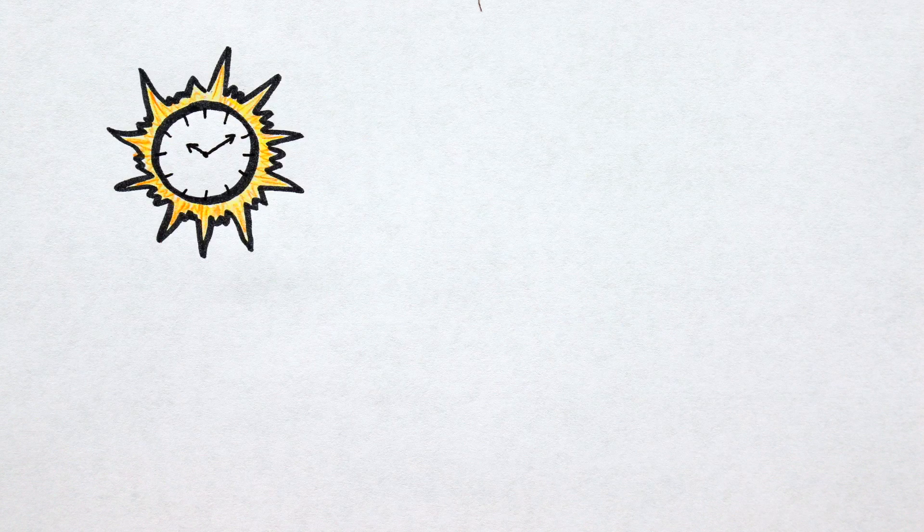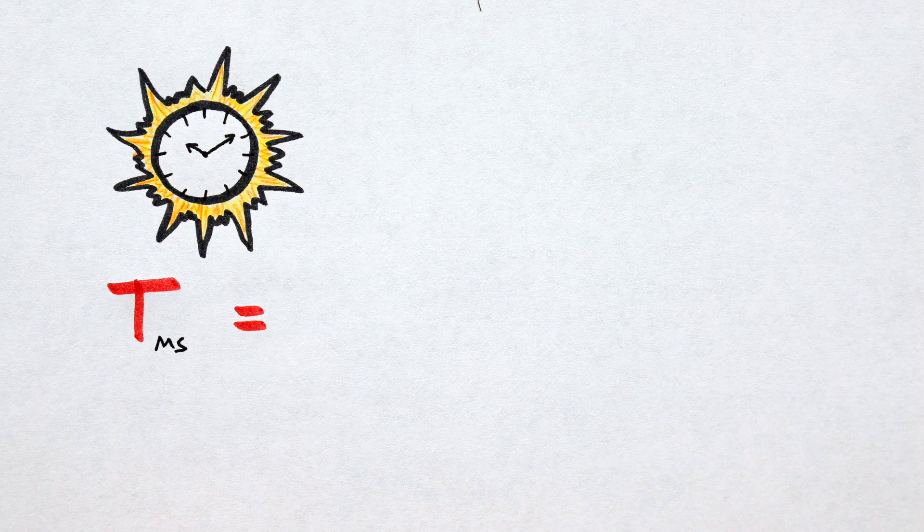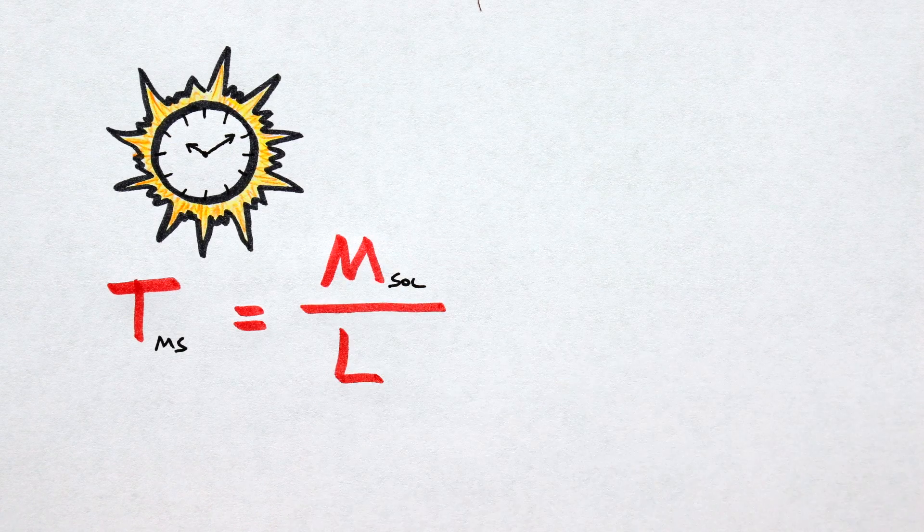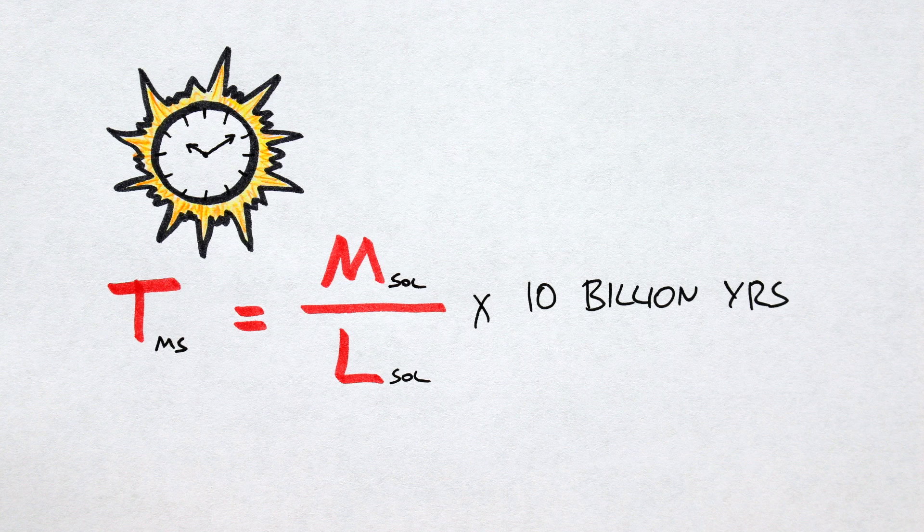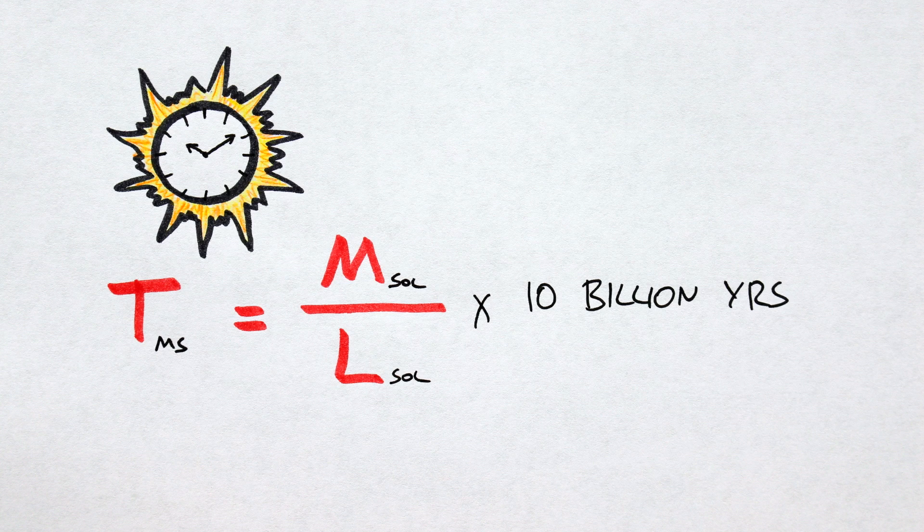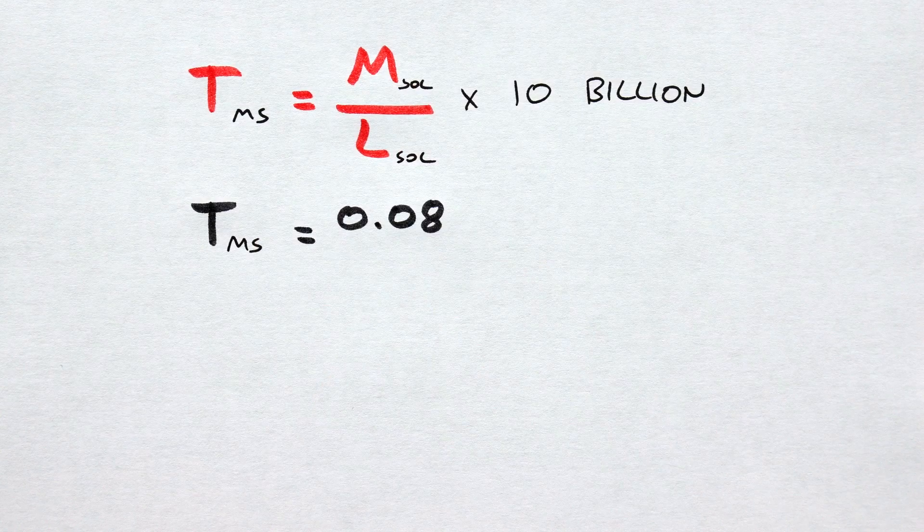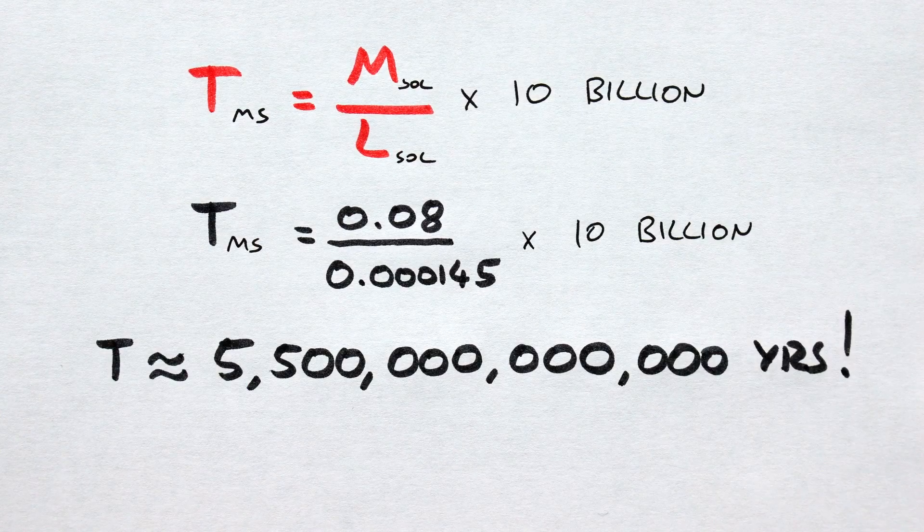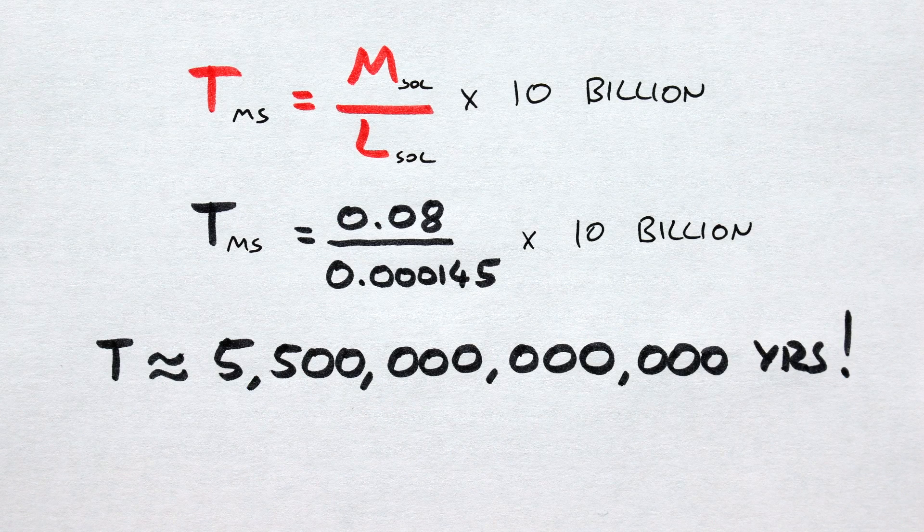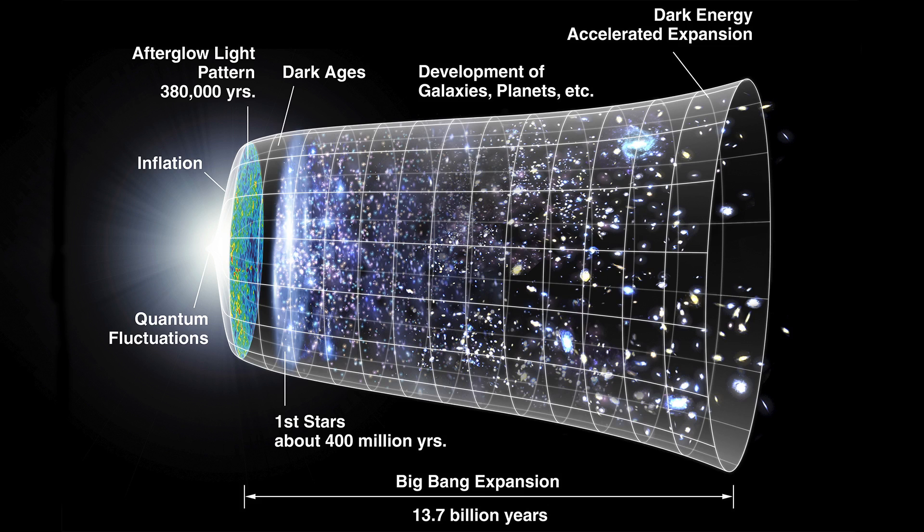The amount of time your star will spend on the main sequence will be given by T, time on the main sequence, is equal to your mass, divided by your luminosity. Multiplying by a solar lifetime, 10 billion years, gives you your star's lifetime in Earth years. Interesting side note: the least massive stars will stay on the main sequence for about 6 trillion years, which is a long time. In fact, up to 400 times longer than time itself.